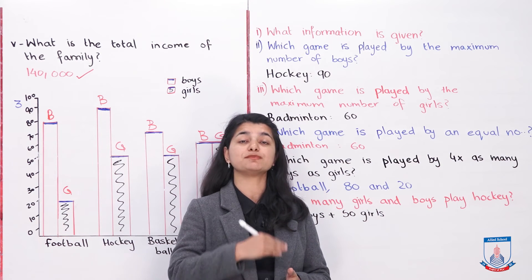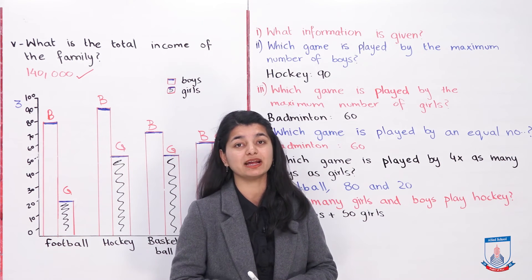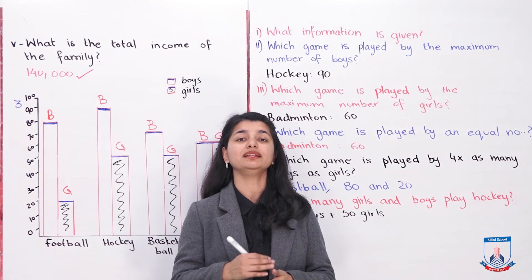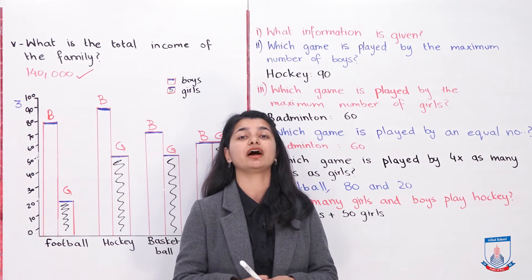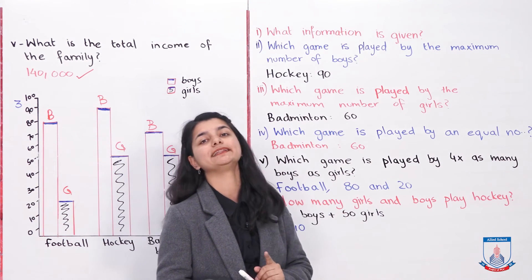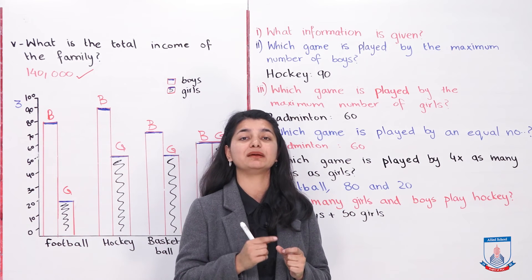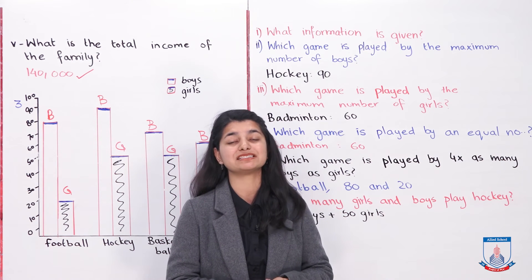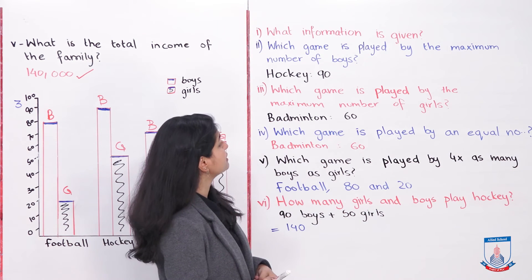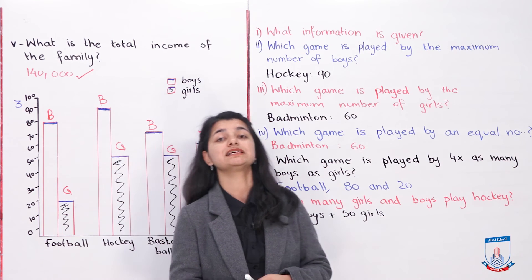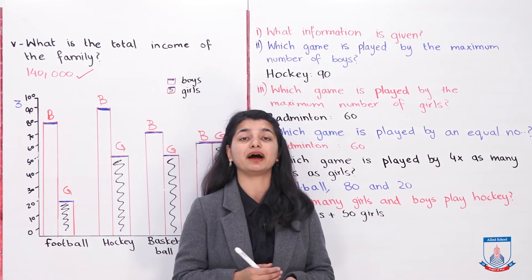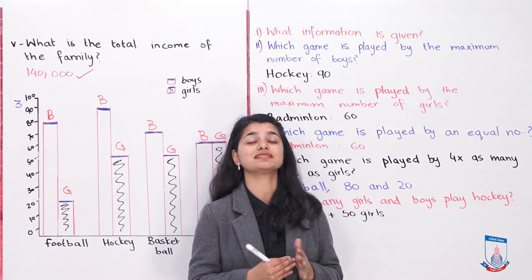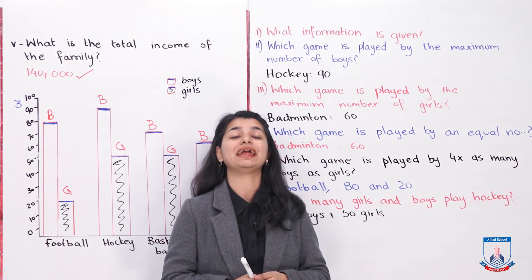If you look at the graph, hockey is the tallest bar in the entire graph, and those 90 boys play hockey. So which game is played by the maximum number of girls? In all the graphs, you can see the highest bar is badminton. That means 60 girls. And that is the highest number of sport played by any girls.